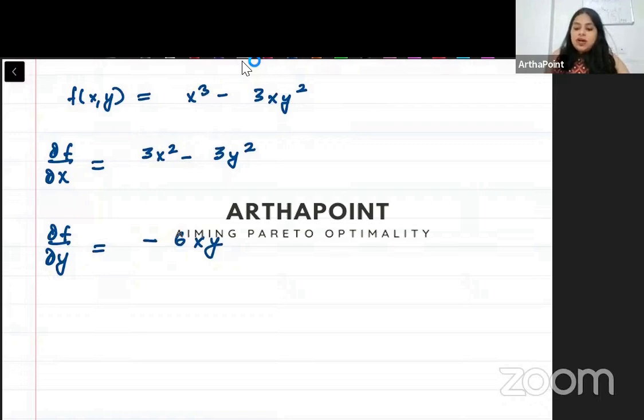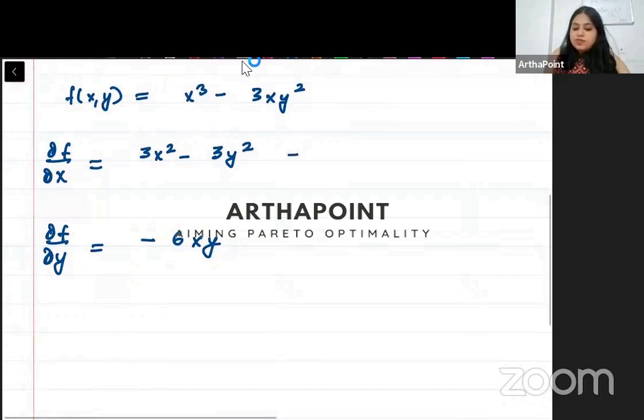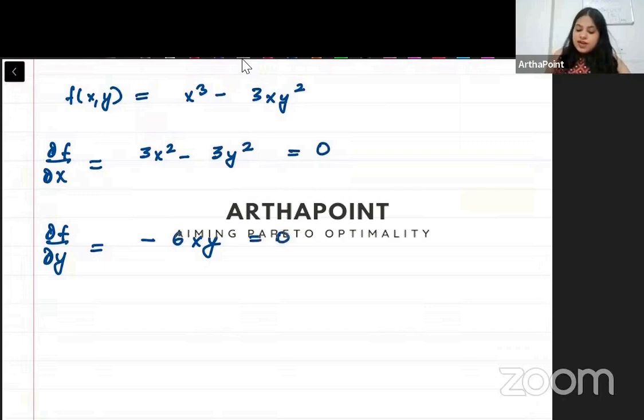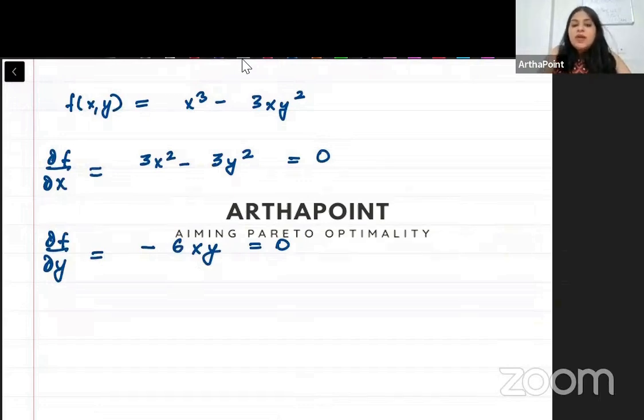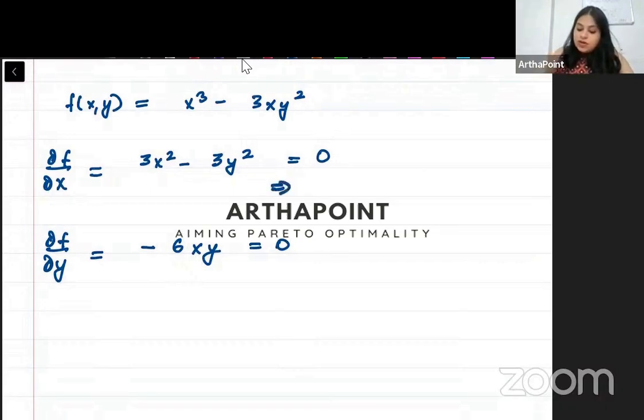I must equate this to 0 and this also to 0. When I equate 3x squared minus 3y squared to 0, what do I get? 3x squared minus 3y squared equals 0, so x squared minus y squared equals 0.